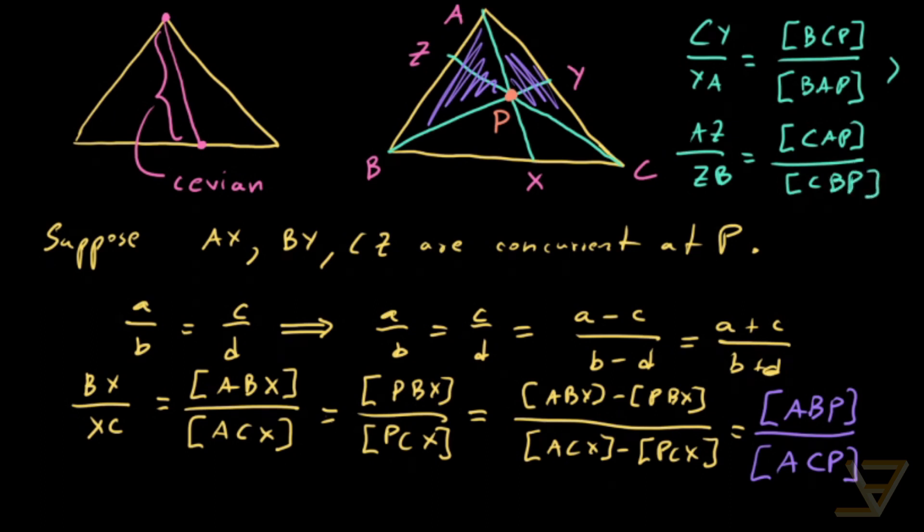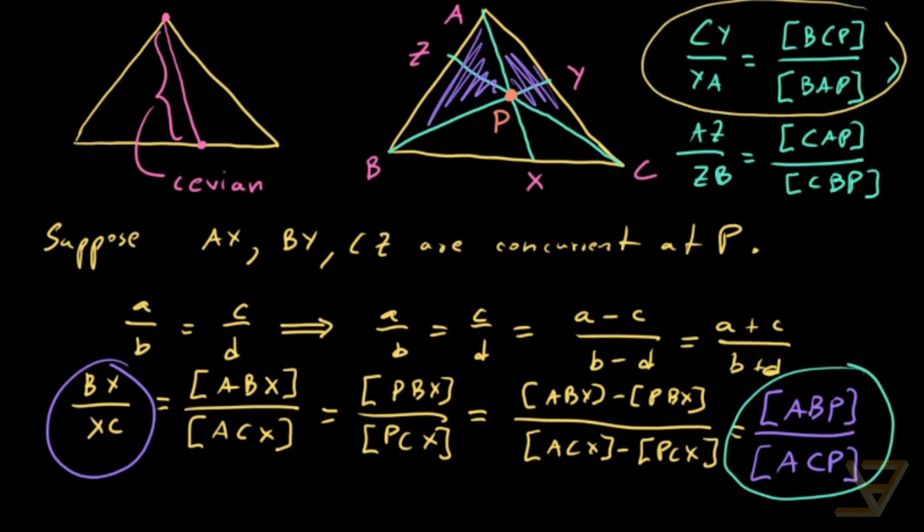And now what we're going to do is that we're just going to multiply all these equations together. So we've got this equals to this. So that's our first equation. We've got this over here, that's our second equation. And this over here, that's our third equation. So let's multiply it all out.